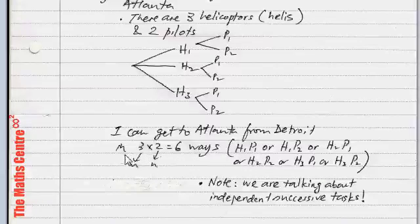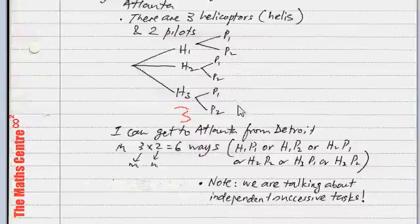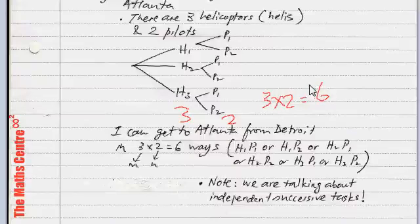So, how do I get this six? The first task I can accomplish in three ways, either H1, H2, or H3. And the second task I can carry out in two ways, P1 or P2. So, three times two, I have six ways on how I can get from Detroit to Atlanta. Note that we are dealing with independent successive tasks.